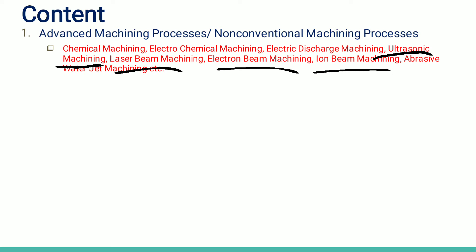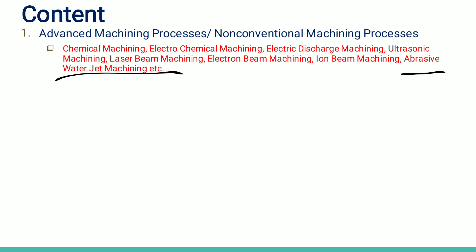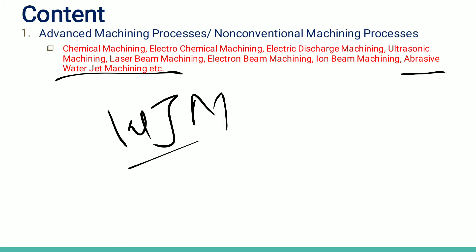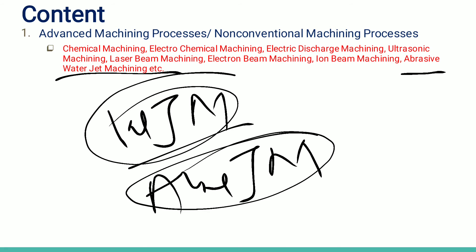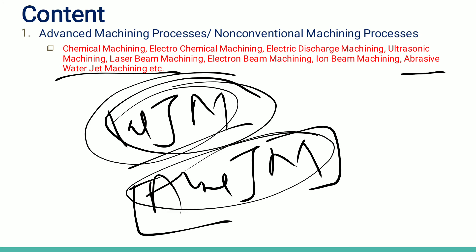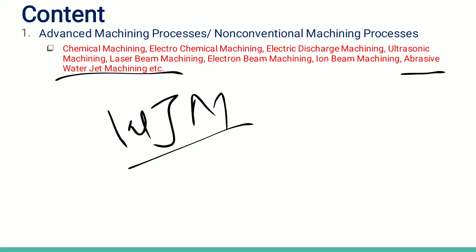In laser beam, electron beam, and ion beam machining, different types of beams are used for the machining purpose to remove material. In abrasive water jet machining, there are two methods: water jet machining (WJM) and abrasive water jet machining (AWJM). In WJM, a high-velocity water jet removes material. In AWJM, abrasive slurry is added to the water jet, which increases the depth of material removal compared to WJM.